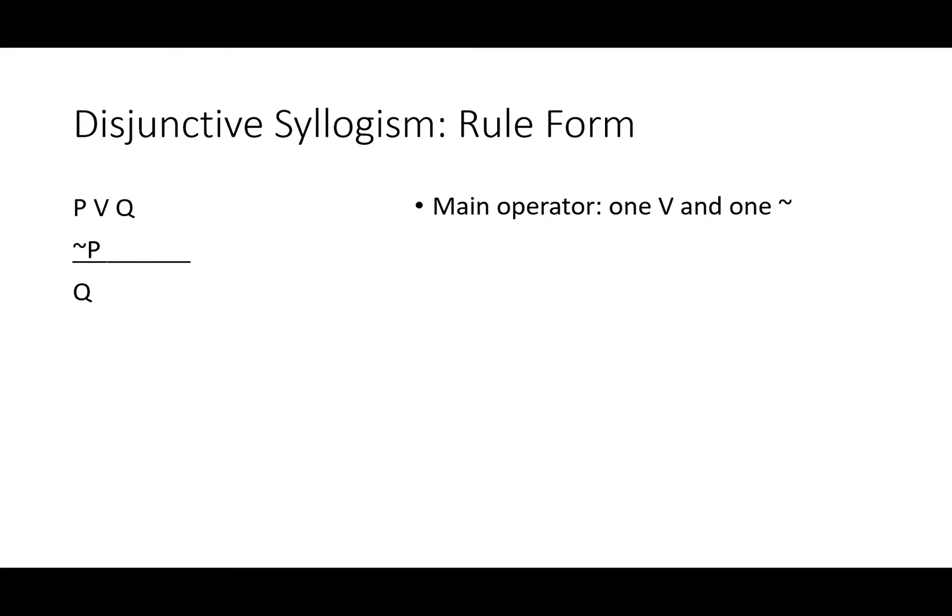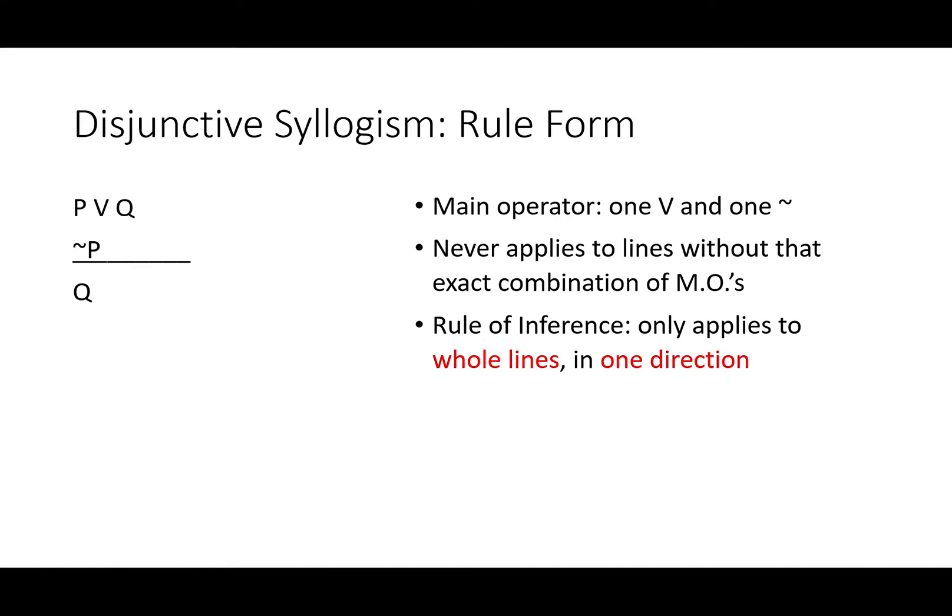Disjunctive syllogism always has one disjunction and one negation as the main operators. It never applies to lines without that exact combination. As a rule of inference, it applies only to whole lines and only in one direction. It always cites one disjunction and the negation of one of the disjuncts. Then it results in the other disjunct.